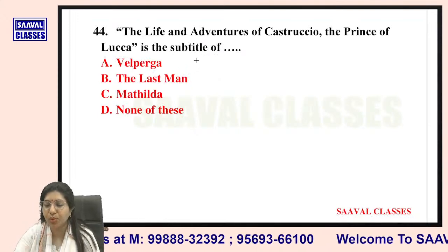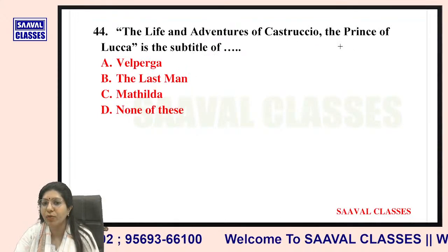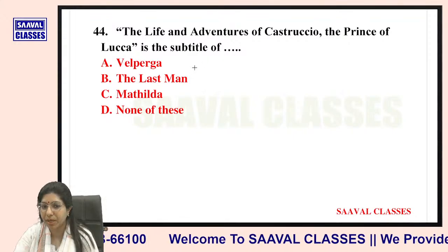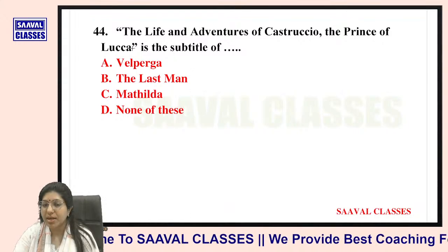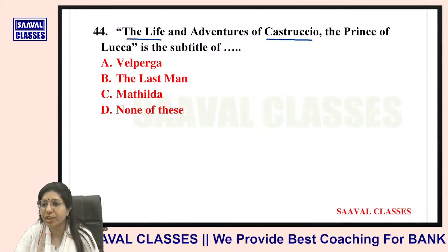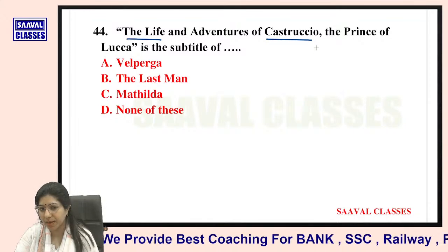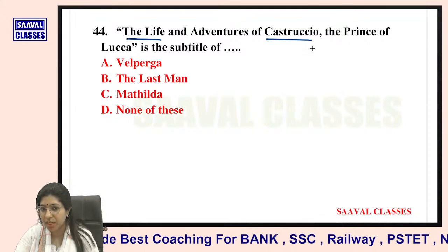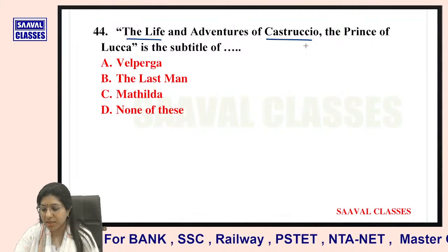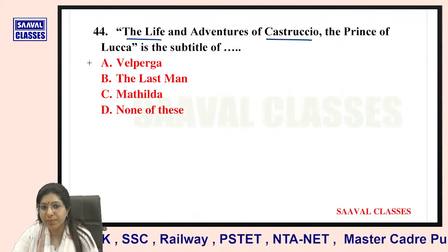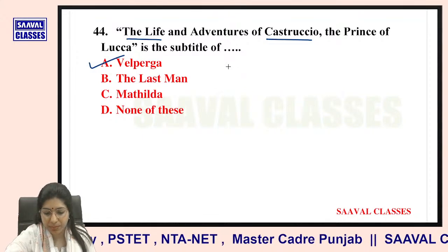Question number forty-four: 'The Life and Adventures of Castruccio, The Prince of Lucca' is the subtitle of which work — Valperga, The Last Man, Mathilda, or none of these? It is the subtitle of Valperga — very good.